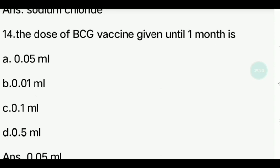Fourteenth question. The dose of BCG vaccine — how much dose do we get? Options: 0.05 ml, 0.01 ml, 0.1 ml. Answer is 0.05 ml. This is the dose of BCG vaccine.